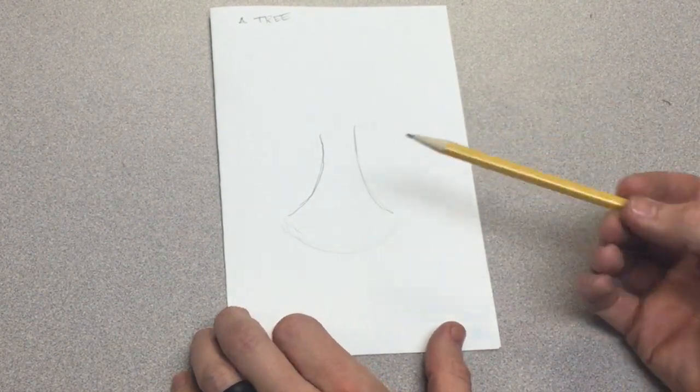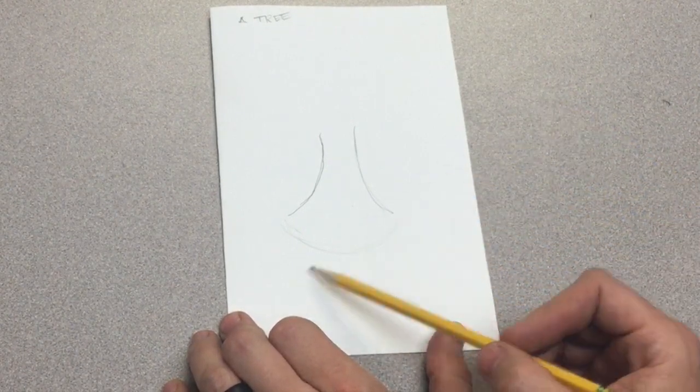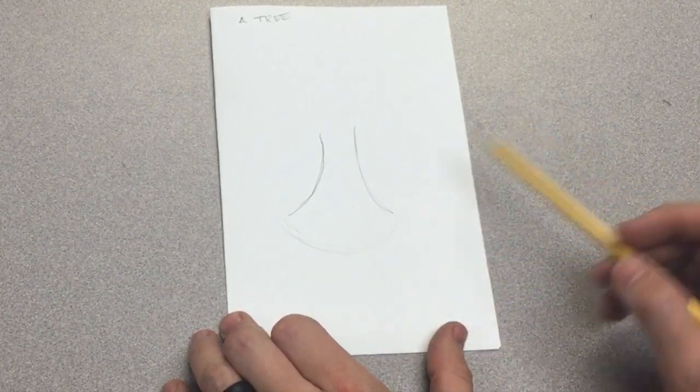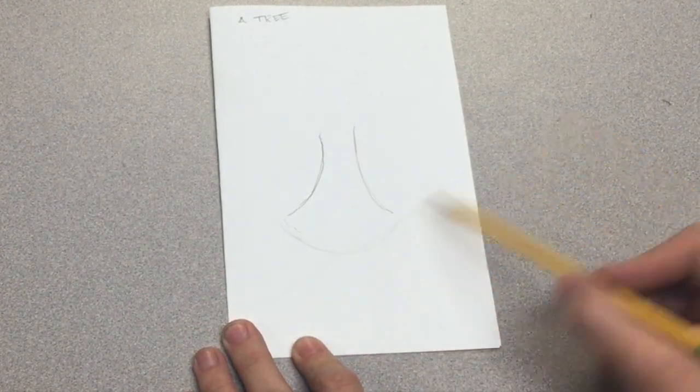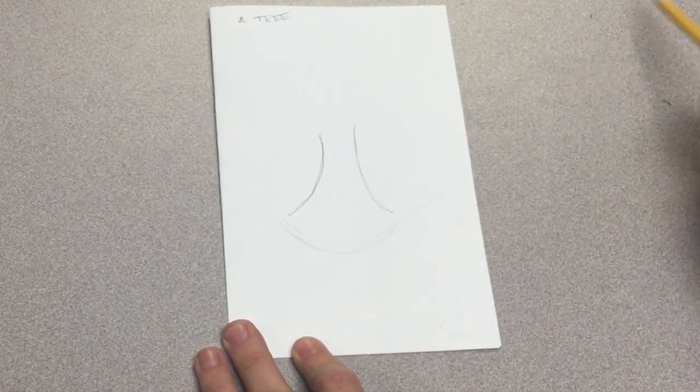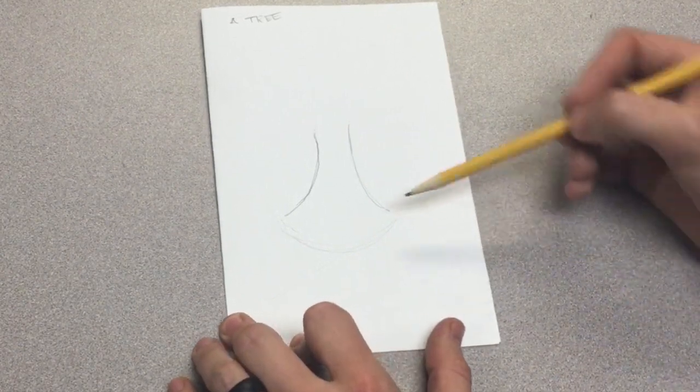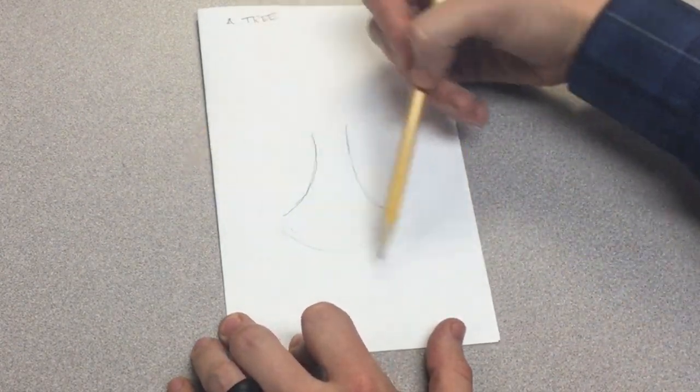We're going to notice some directions going off into the distance in an angle. Similar to when we drew a cube, we're going to have an angle going up into the right corner, and another going up into the left corner.